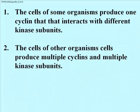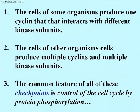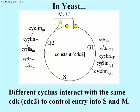The cells of lower organisms use a single cyclin molecule to activate different CDKs, or cyclin-dependent kinases, at different cell cycle checkpoints. Those of other organisms make different cyclins to interact with different CDKs. What dividing eukaryotic cells have in common are similar checkpoints, controlling similar transitions during the cell cycle, and the fact that they control the cell cycle by protein phosphorylation. Here's the cell cycle of yeast, which uses a single kinase subunit called CDC2.